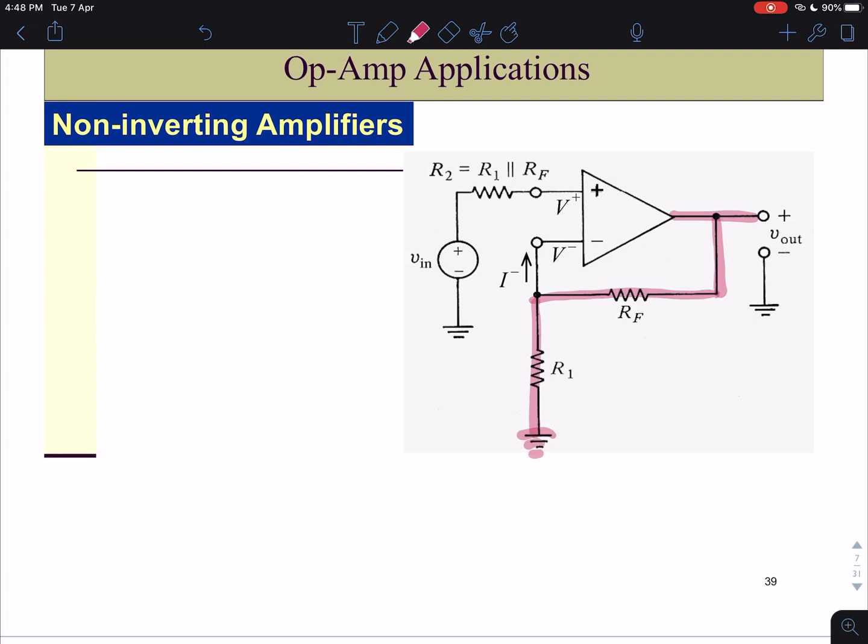Does the current flow upward here? I minus here. What is the value of I minus here? Basically we know that there is no current into the op-amp. So I minus here is equal to zero. There is no current here.